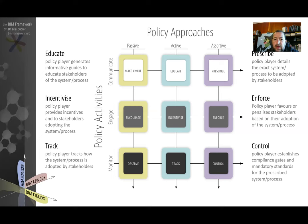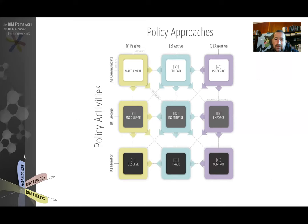These are the three approaches a policy maker can take across the three types of policy activities. This doesn't mean that if a policy maker is passive at one activity level, they can't be more active or even more assertive at another. This model clarifies that you don't need to go linearly — you don't have to always make aware, encourage, and observe. A snapshot of any policy maker at any one time may exhibit different types of behavior.